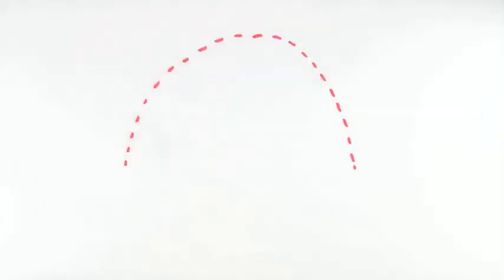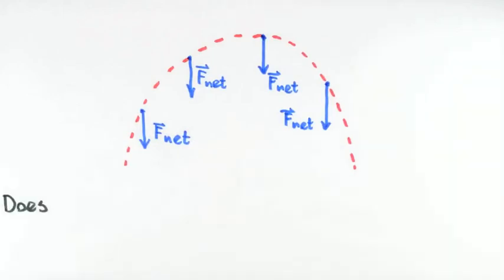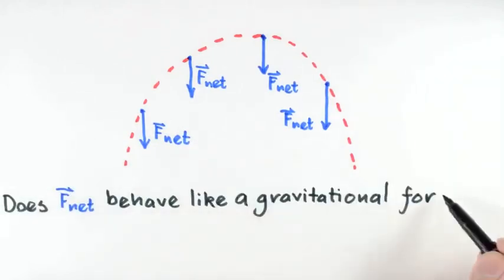Now we don't have any further information on what agents in the surroundings are the sources of the net force. Even so, we could still make some reasonable guesses. For example, the shape of the trajectory and the direction of f net suggest that the system behaves something like a thrown object, a projectile. From this suggestion, we might try to see if f net behaves as if it were due to a gravitational interaction, like the weight force acting on the object.